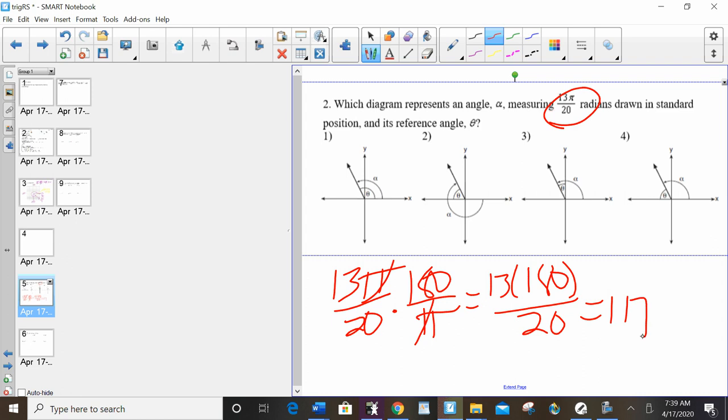13 times 180 over 20 is 117. So it's got to be in quadrant 2, which I mean they're all in quadrant 2. So what you have to understand is what that means if the angle is there, it means it's starting at zero and going to there. So these two seem good as far as the angle itself goes. This is going the wrong way. This one seems good as well.